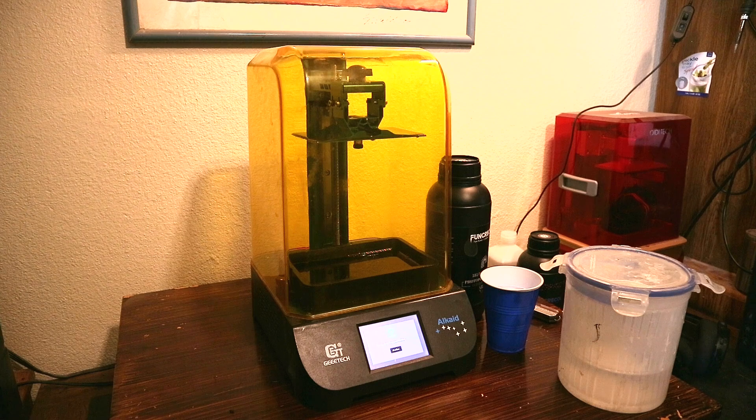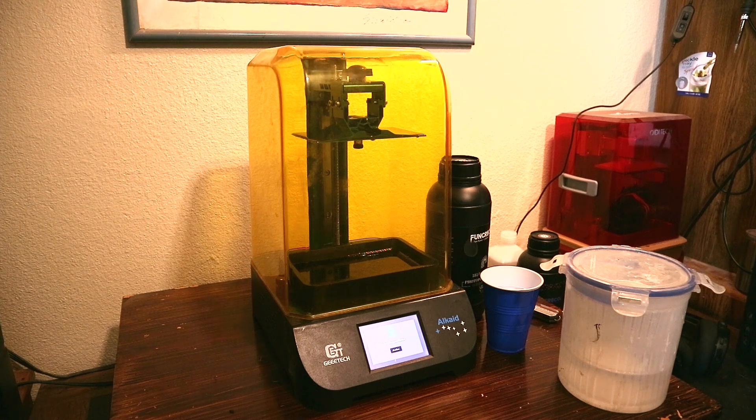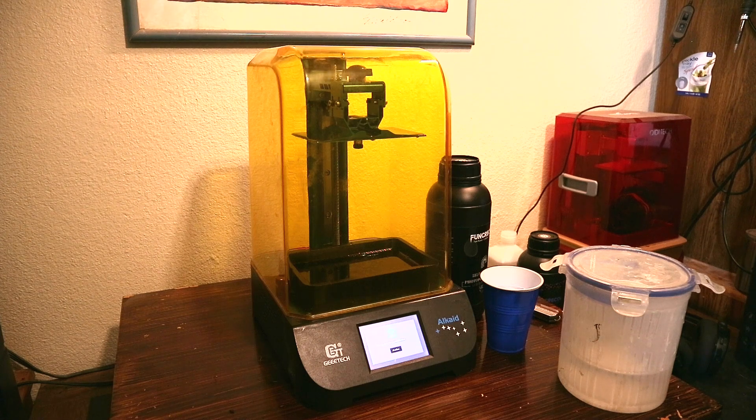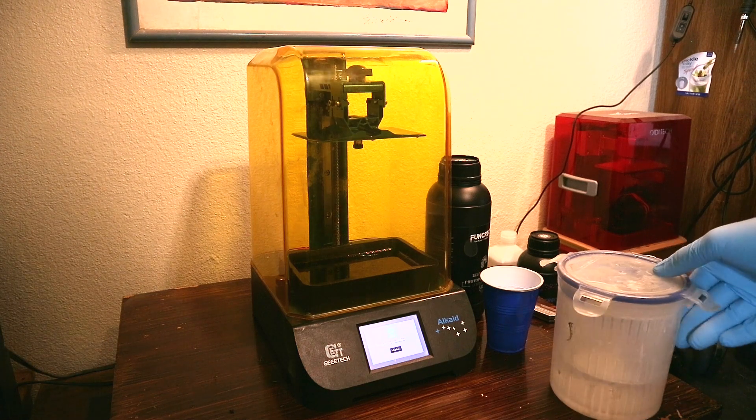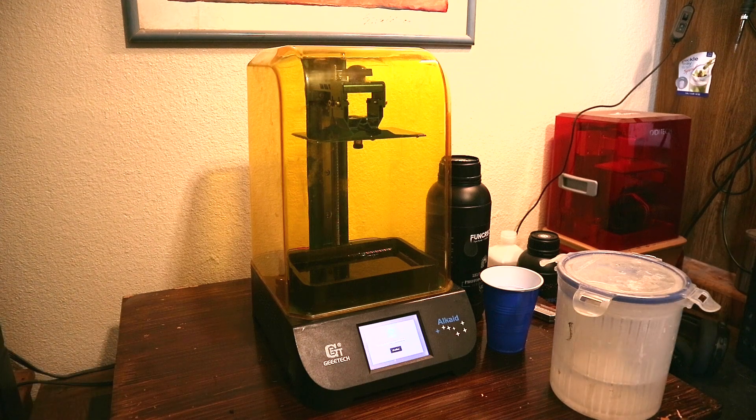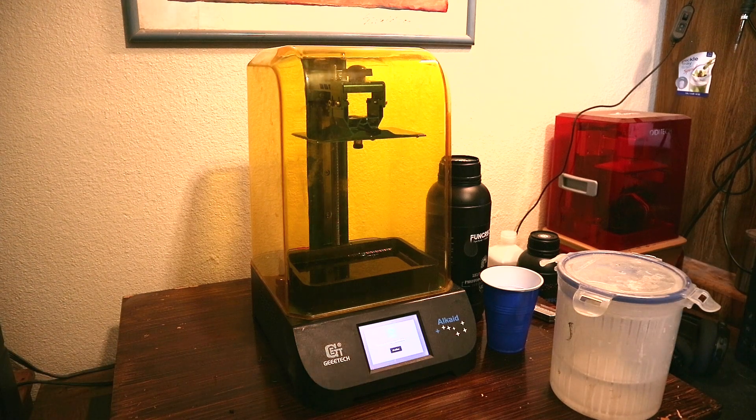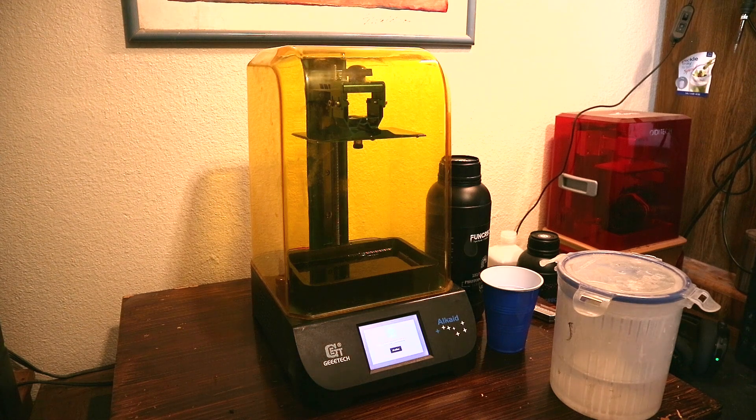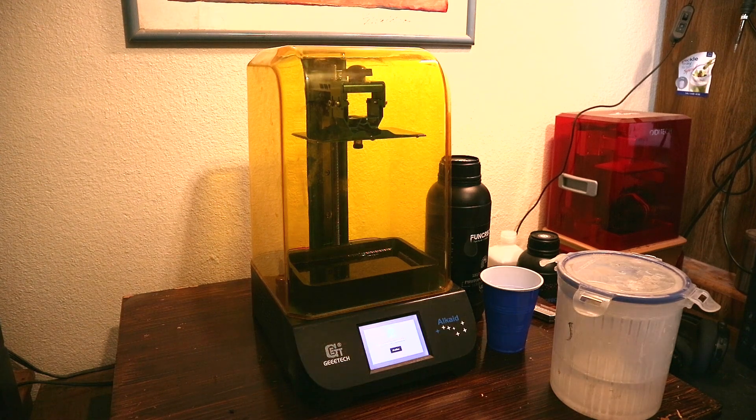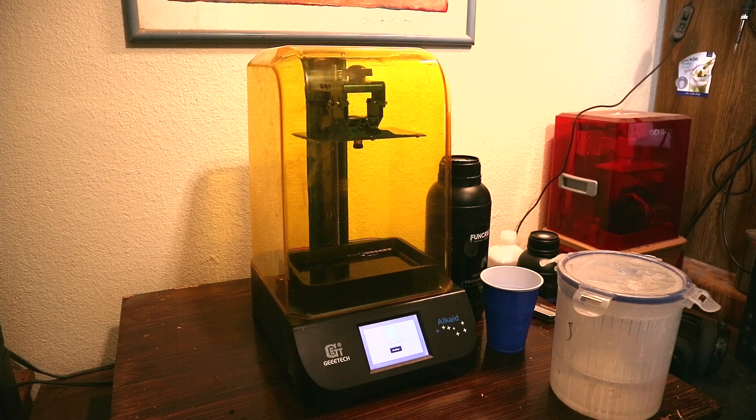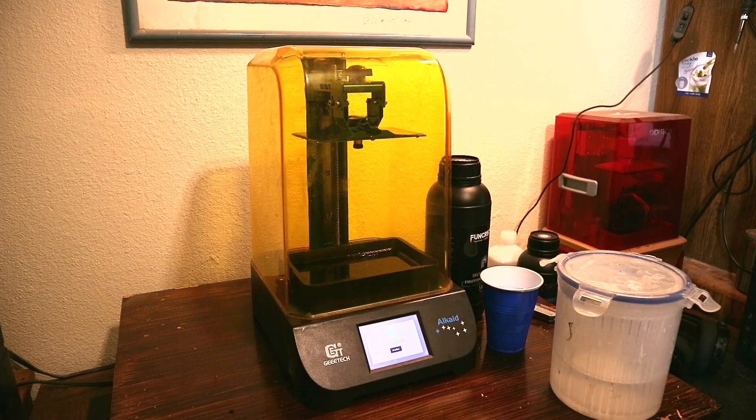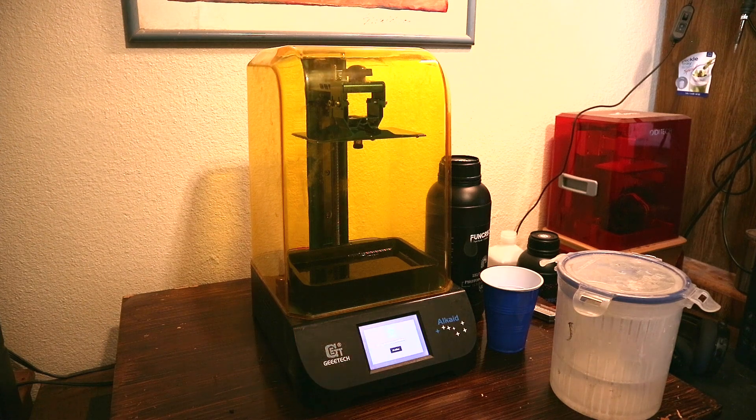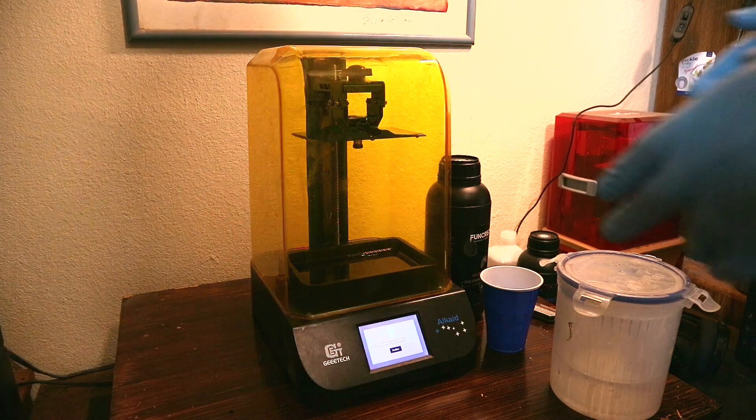They say do not submerge it in alcohol. Use a painter's brush with alcohol to brush any remaining resin off of the part and then to submerge in water for 5 to 10 minutes to cure it. They say nothing about curing under light. So I am going to try curing under light anyway and then put it in water or maybe brush it off with alcohol, then put it in water, then cure it with light after it comes out of the water.